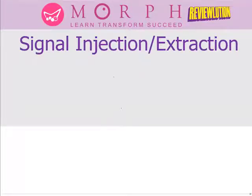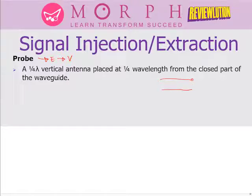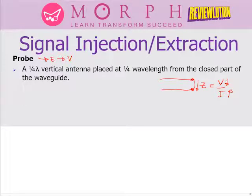These probes and loops act like small antennas. The probe is a quarter-wavelength vertical antenna placed at one-quarter wavelength from the closed part of the waveguide. Think of the probe as associated with the electric field — electric field is synonymous with voltage. Going back to transmission line concepts: if a transmission line is terminated as a short, the impedance at the short is minimum, so voltage there is minimum and current is maximum. So we cannot put a probe at the shorted side because the voltage there is minimum.